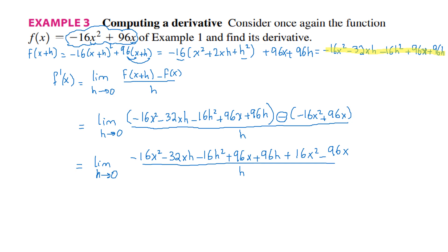Now let's do some simplifications. Opposite terms are going to cancel. Minus 16x squared cancels with 16x squared, and 96x cancels with minus 96x. Our expression is the limit as h goes to 0. Notice every remaining term contains h. I'm going to take h outside as a common factor: minus 32x, minus 16h, and 96. All divided by h.